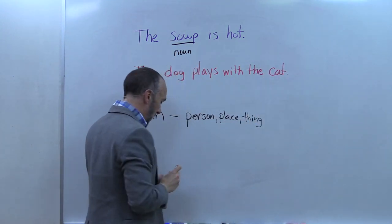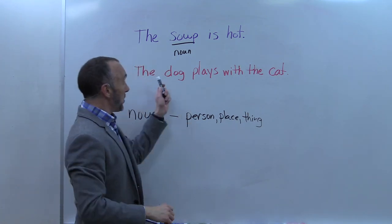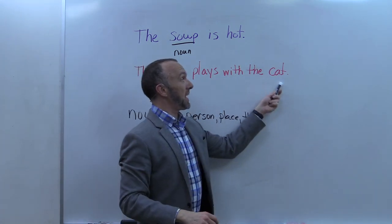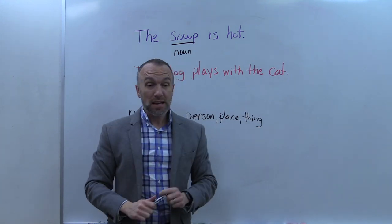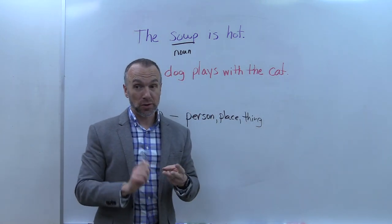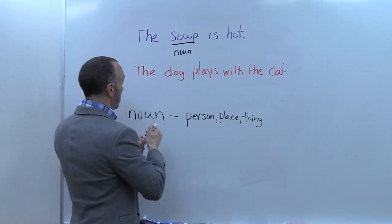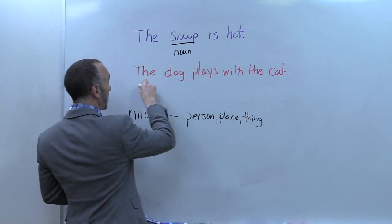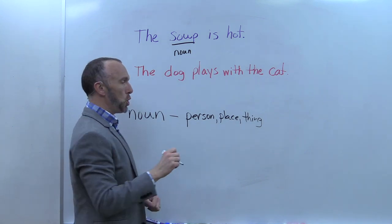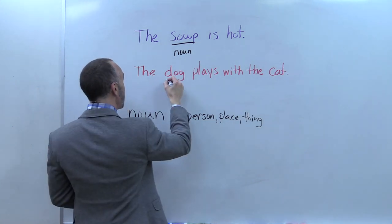Let's read this sentence together: The dog plays with the cat. A noun is a word in the sentence that is a person, place, or thing. Is 'dog' a person, place, or thing? Yes, it is!